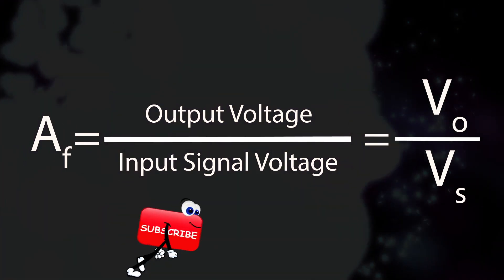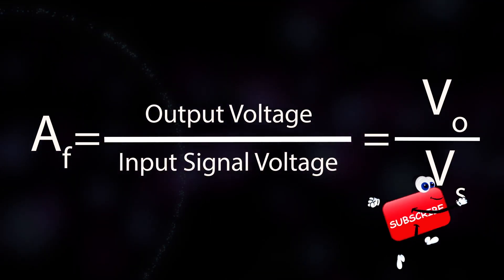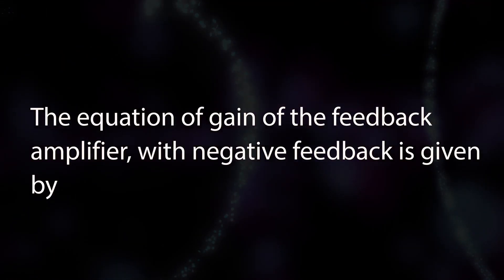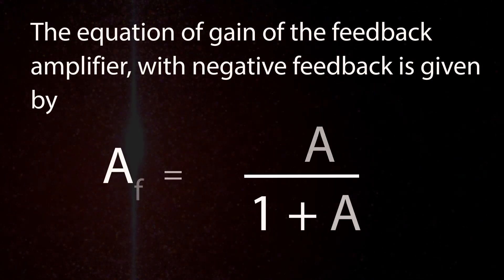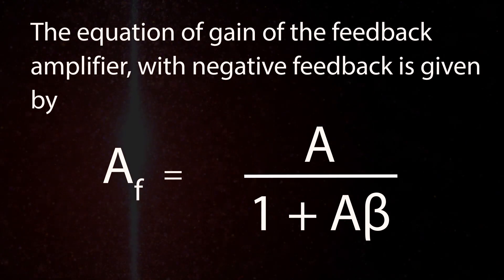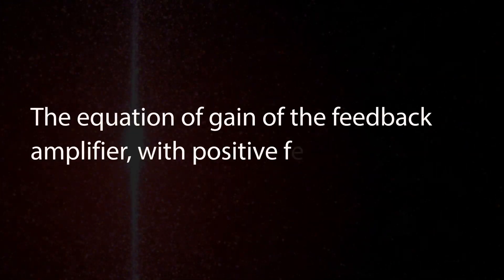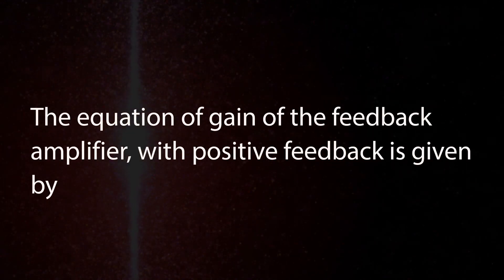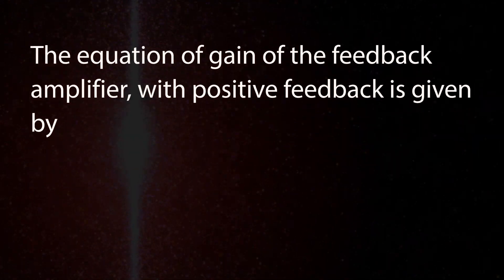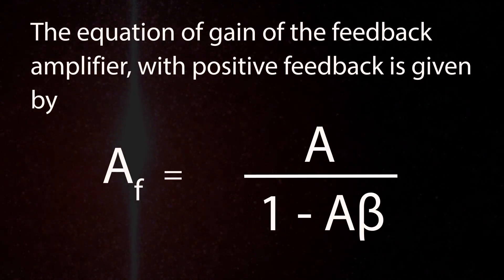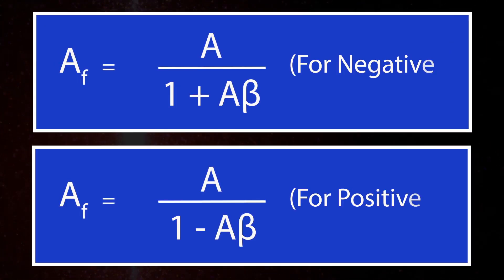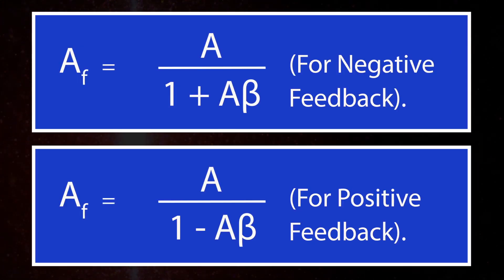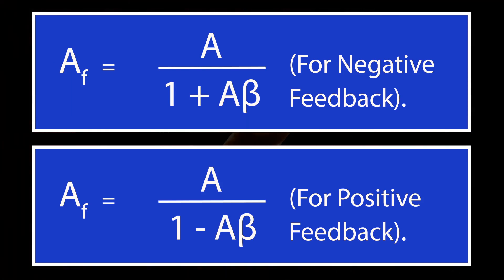From the above two equations, we can understand that the equation of gain of the feedback amplifier with negative feedback is given by AF equals A by 1 plus A beta. The equation of gain of the feedback amplifier with positive feedback is given by AF equals A by 1 minus A beta. These are the standard equations to calculate the gain of feedback amplifiers.